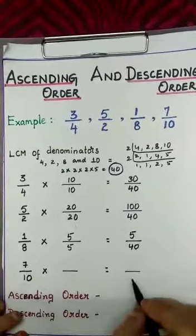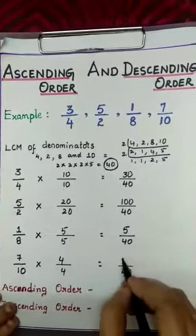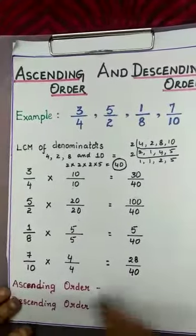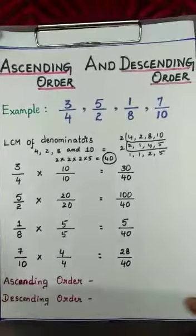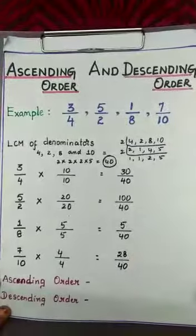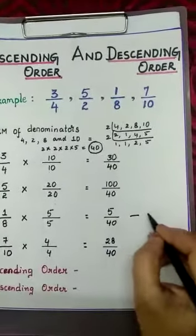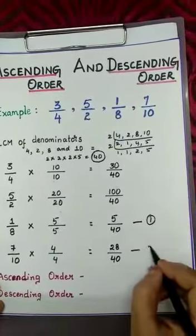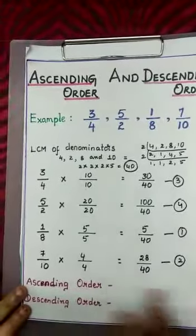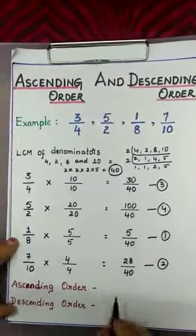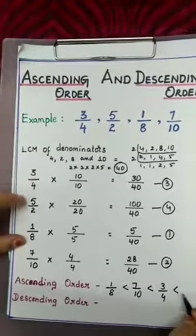For 7/10: 10 × 4 = 40, and 7 × 4 = 28, giving 28/40 which equals 7/10. Now all four fractions are like fractions. Comparing numerators 30, 100, 5, and 28 for ascending order: 5/40 < 28/40 < 30/40 < 100/40. So the ascending order is: 1/8 < 7/10 < 3/4 < 5/2.